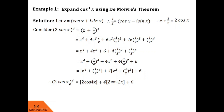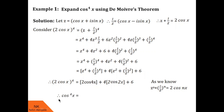We want the expansion of cos raised to 4x, so we take 2 raised to 4 from the left side to the right side. We get cos raised to 4x equals 1 by 2 raised to 4, times 2 cos 4x plus 8 cos 2x plus 6. This is the expansion of cos raised to 4x. I hope you understood how to expand cos raised to nx types of functions.